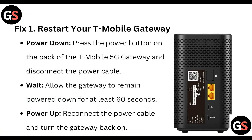Fix 1: Restart your T-Mobile Gateway. Power down by pressing the unlock power button on the back of the T-Mobile 5G Gateway and disconnect the power cable. Wait, allowing the gateway to remain powered down for at least 60 seconds. Then reconnect the power cable and turn the gateway back on.